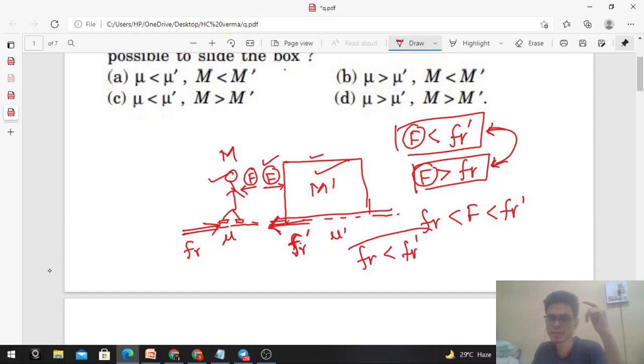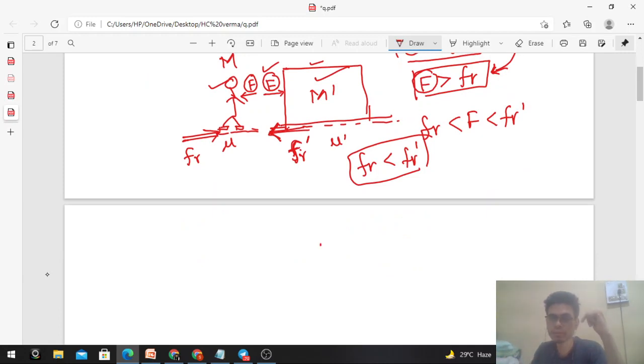And what are F_r and F_r'? F_r will be N into μ, should be less than N' into μ'. The limiting value of the friction.